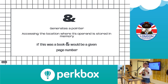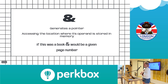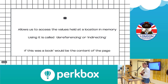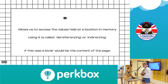So this ampersand — we're actually getting to the things I got confused about. The ampersand generates a pointer. It accesses the location where it's operating to store in memory. I read a blog post about how they used the book analogy to explain pointers, and I thought that was genius. If you had a book, the ampersand would essentially be the page number. And this little star allows us to access the values held at that location in memory. It's called dereferencing or indirecting. And if this was a book, this would be the content on the page.